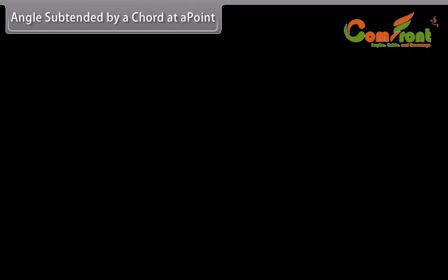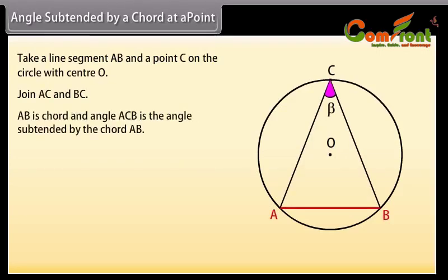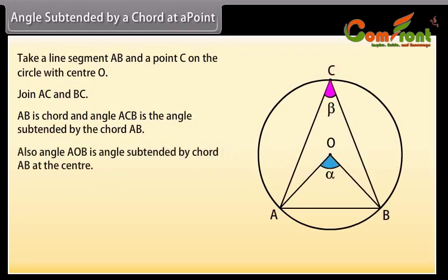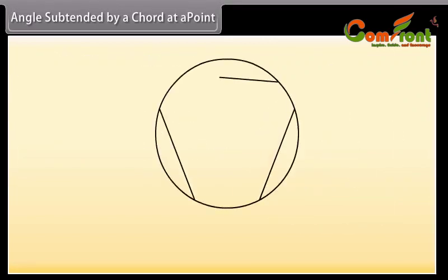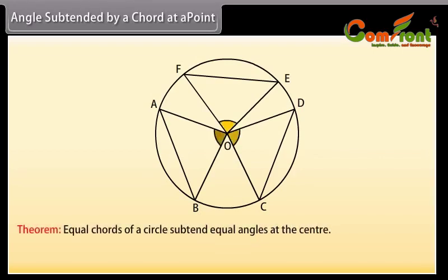Angle subtended by a chord at a point. Take a line segment AB and a point C on the circle with center O. Join AC and BC. Here AB is a chord, and angle ACB is the angle subtended by the chord AB at point C. Also, angle AOB is the angle subtended by chord AB at the center. If we draw two or more equal chords of a circle and measure the angles subtended by them at the center, we will find that the angles subtended by them at the center are equal. This gives us the theorem: equal chords of a circle subtend equal angles at the center.